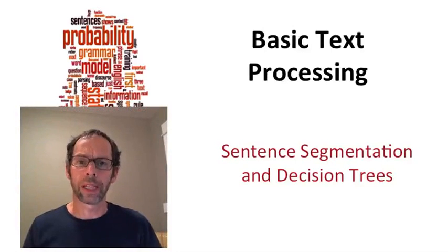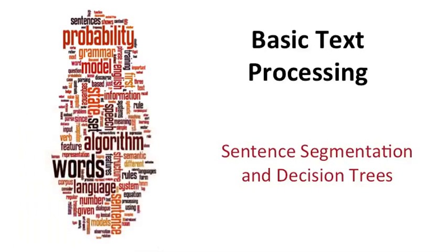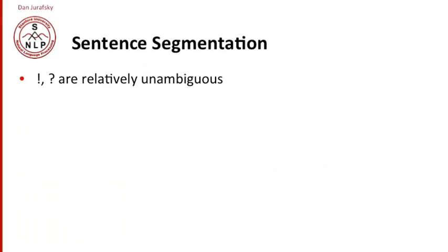Our final discussion in basic text processing is segmenting out sentences from running text. So how are we going to segment out sentences? Things that end in exclamation points or question marks, that's really great because those are relatively unambiguous cues that we've gotten to the end of a sentence.